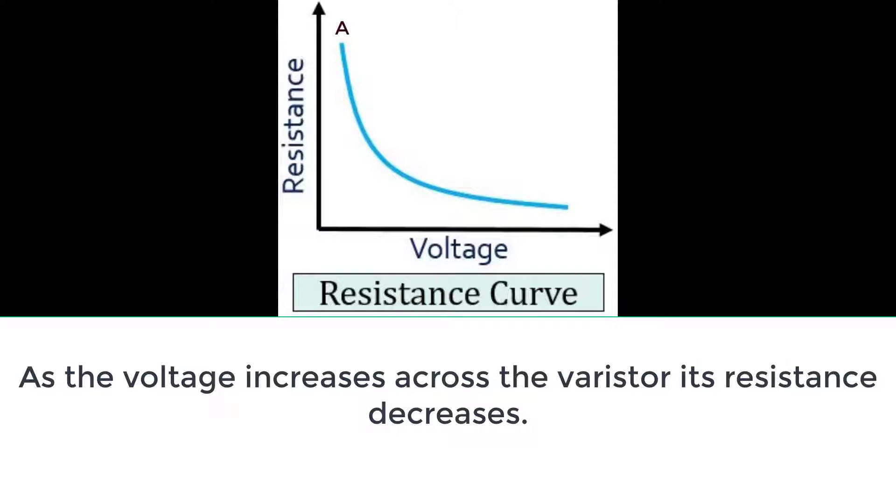Let us consider any reference point A in the graph. At this point A, the voltage applied across MOV is very small and the internal resistance of MOV is maximum.